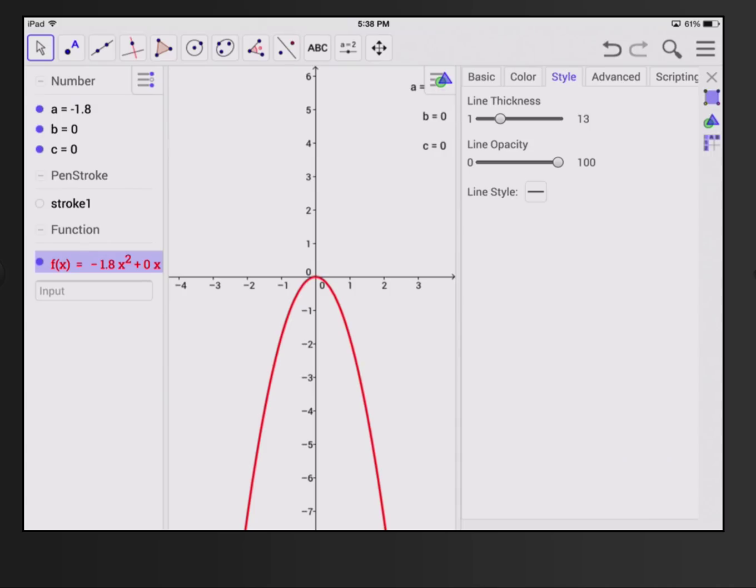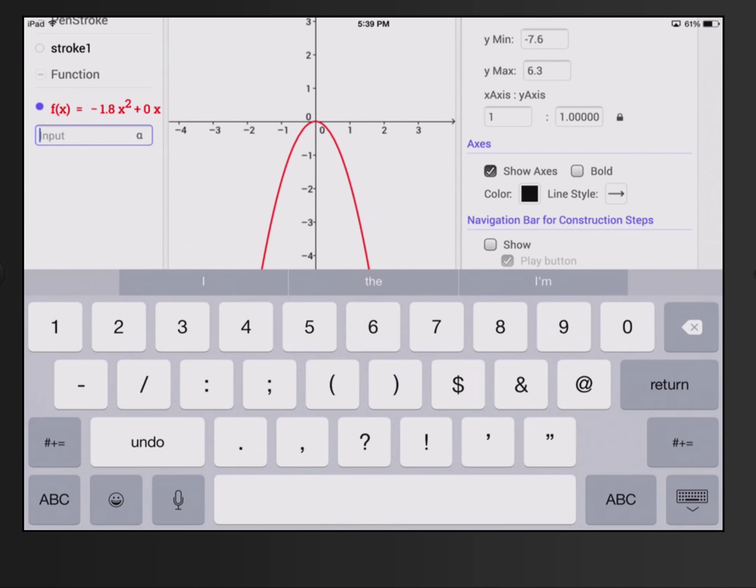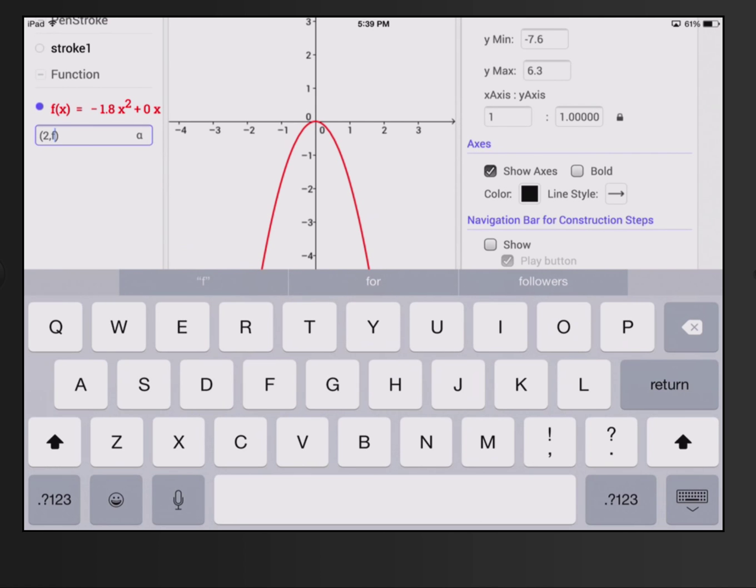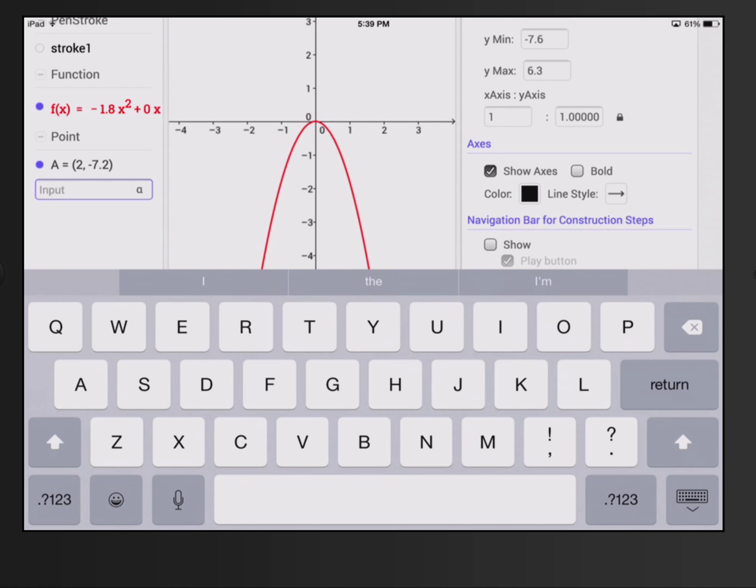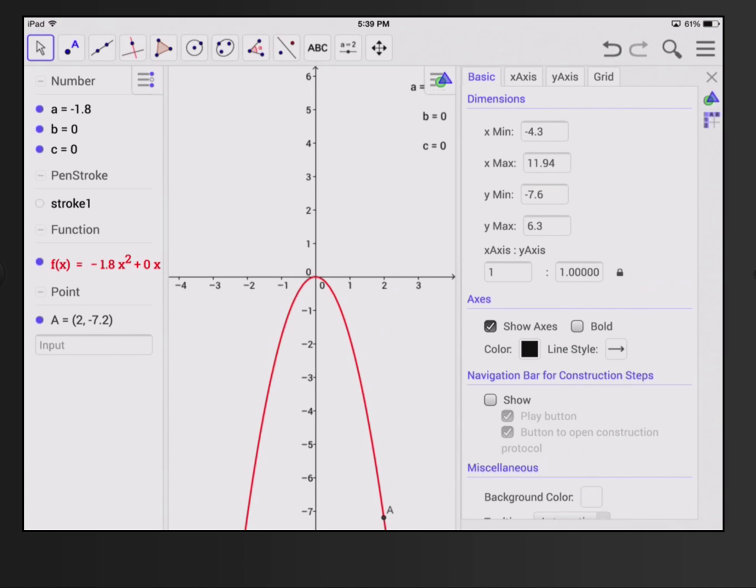All right, and I'm going to put some points on it. I'm going to put the point on where the x value equals 2, and the y value equals f of 2. That's just to get one extra point so that we can look at that in a bit, and that put that point A way down.